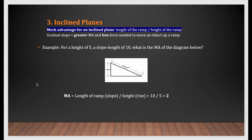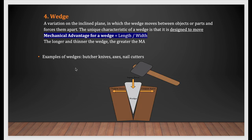The next thing is the mechanical advantage of an inclined plane. As mentioned, mechanical advantage is either output force over input force, or the length of the ramp over the height of the ramp. You will definitely see that type of problem on the actual test. After that, learn the mechanical advantage of a wedge: mechanical advantage equals length of the wedge over its width.